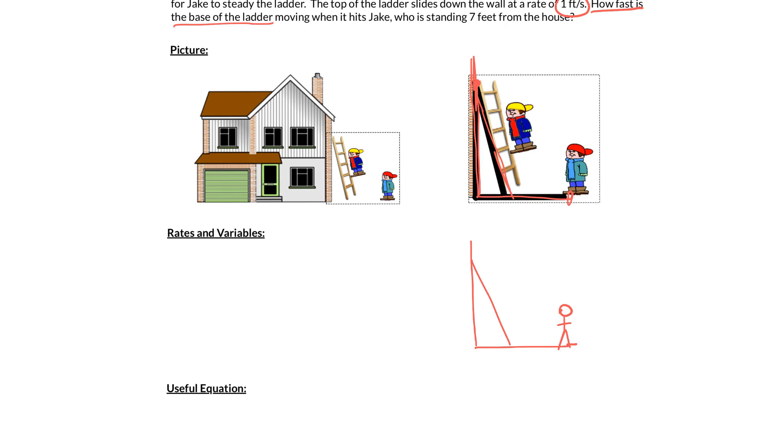And then we need to label our picture. So what do we know? What numbers are they giving us? We know that the ladder is 25 feet long and we know that the distance from the base of the wall to Jake is 7 feet. Now notice I have not drawn my picture to scale at all because my ladder is supposed to be 25 feet and that distance is only supposed to be 7, but it doesn't matter because I've got the basic shape here.